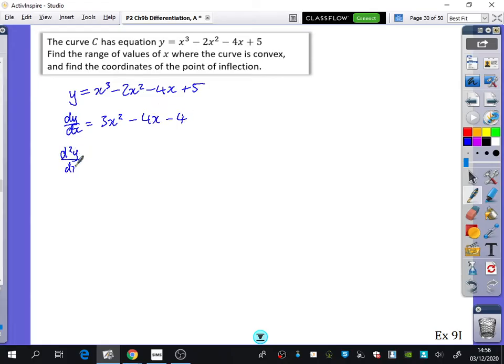This differentiates to 3x² - 4x - 4. And then I'm going to find the second derivative, because obviously that's the same as f''. And you just get 6x - 4. If it is convex, we know that the second derivative is always greater than 0.